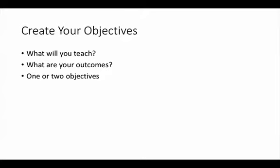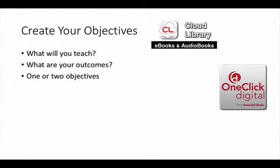When you begin to think about creating a class or a program, you need to think about your objectives first. What will you teach? What are your outcomes? What do you want the library user to do after you teach your class? Phrase your outcomes to something like: the library user will demonstrate how to use the 3M client to download e-books. Use action verbs that indicate your learner will do something, and avoid ambiguous terms like 'know about' or 'understand,' as those are harder to gauge.